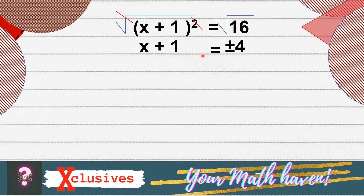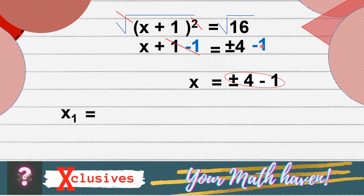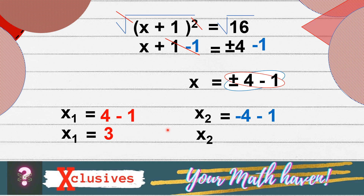Now, remember, on the left side, it must only be one term and that is only x. So, we need to transpose positive 1 to the other side. To do that, we are going to subtract both sides by 1. So, we have x plus 1 minus 1, that is 0, is equal to positive and negative 4 minus 1. So, our x sub 1 is equal to positive 4 minus 1, that is positive 3. Our x sub 2 is equal to the negative value of 4 minus 1, so negative 4 minus 1, that is negative 5. So, our roots are positive 3 and negative 5.